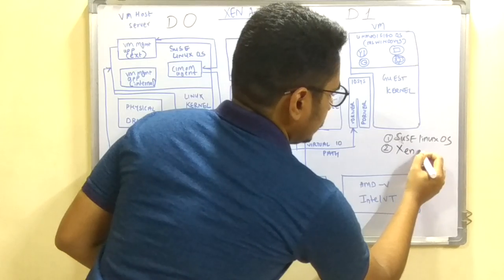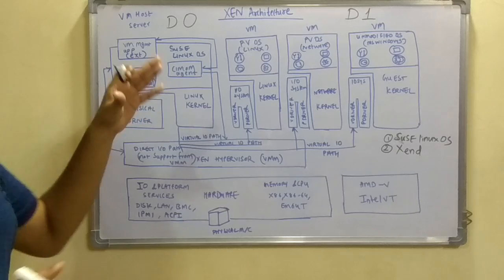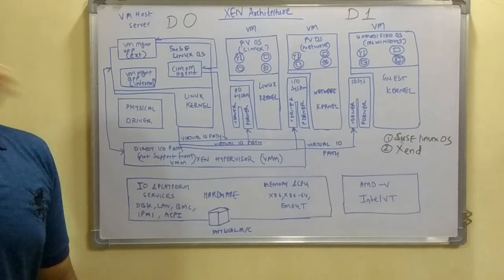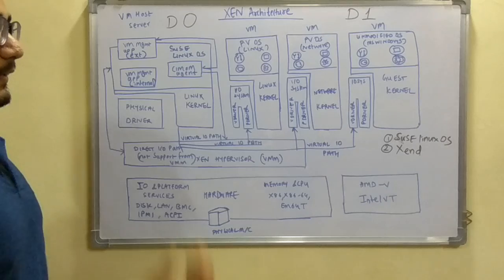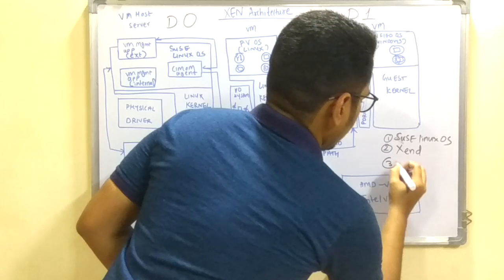Next you have Xen-D. This Xen-D is basically used for storing or storage of the configuration files, configuration.properties files which are there for each of the individual virtual machines. It will create those individual config.properties files which are kept in Xen-D.